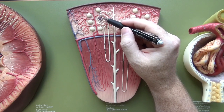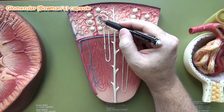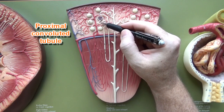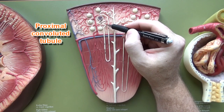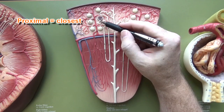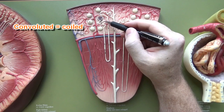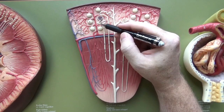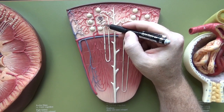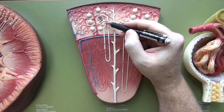The filtrate is going to be collected by the capsule and sent to the proximal convoluted tubule, which is this right here. It's called proximal because it's closest to the renal corpuscle, and convoluted because it's coiled. Most of the reabsorption will happen at this tubule.